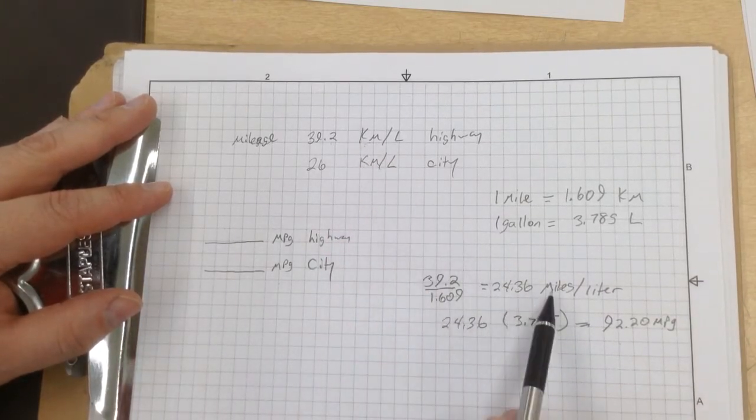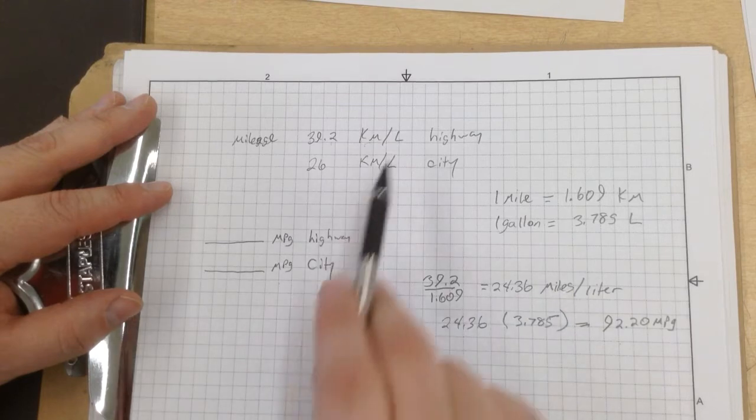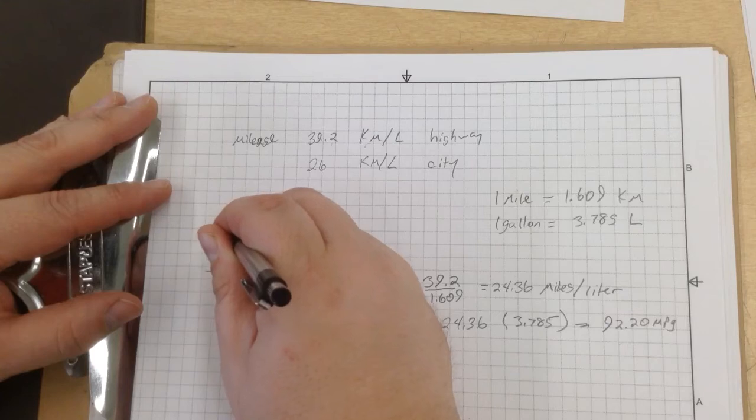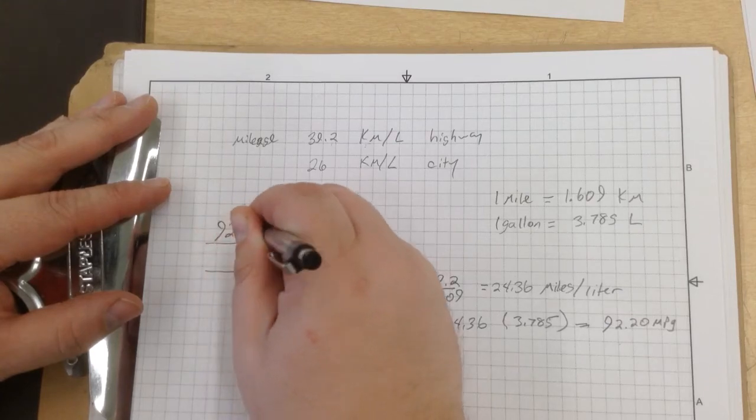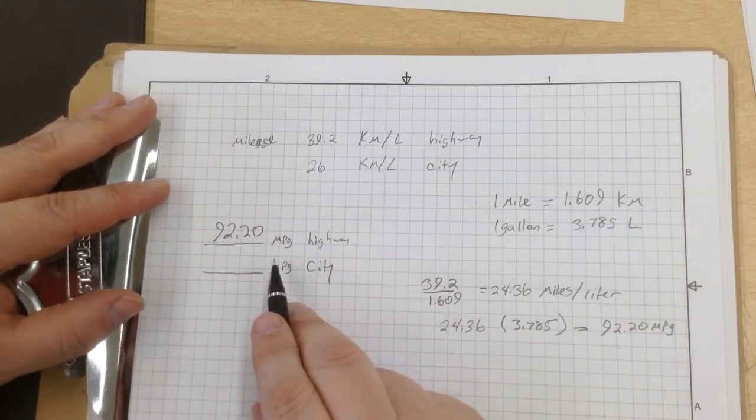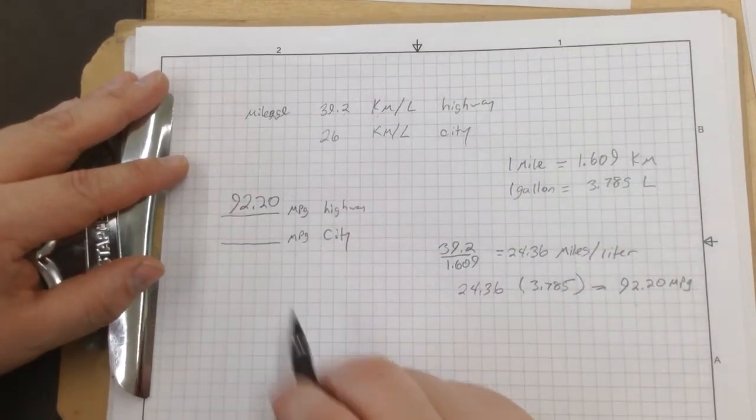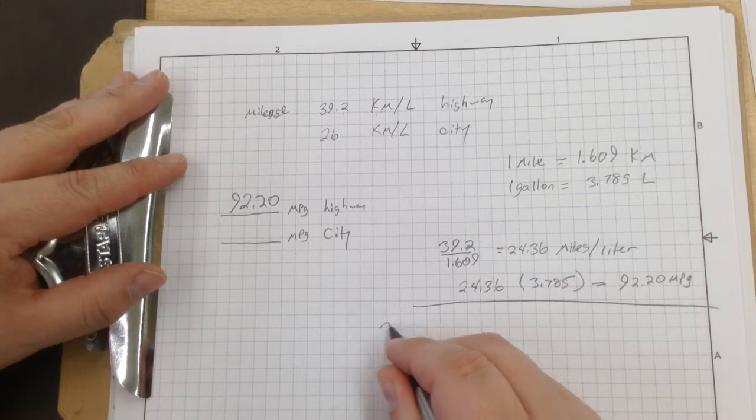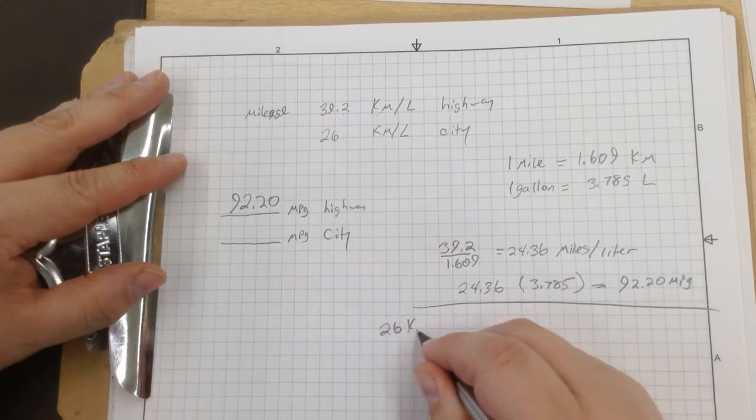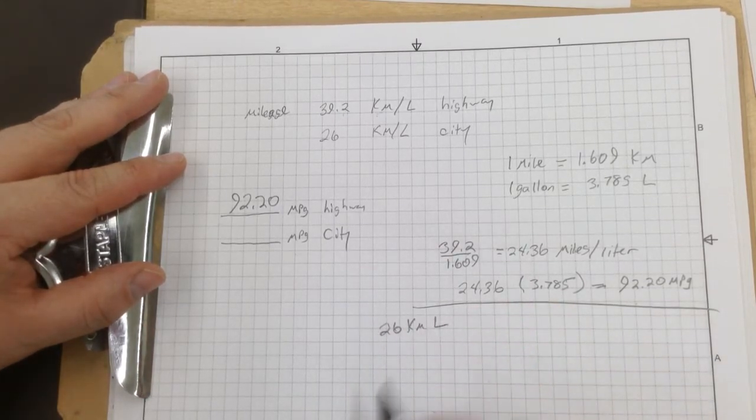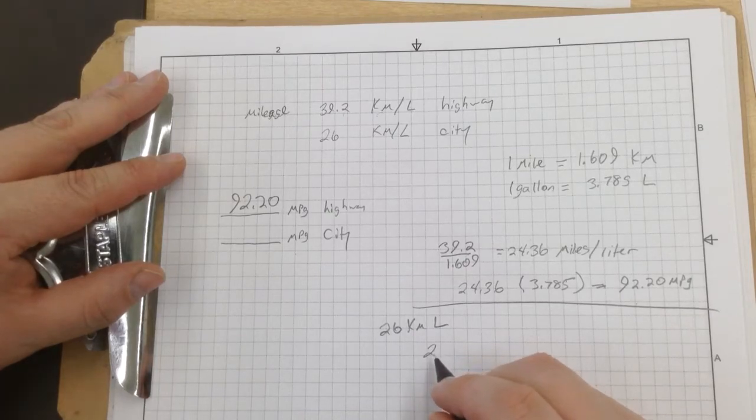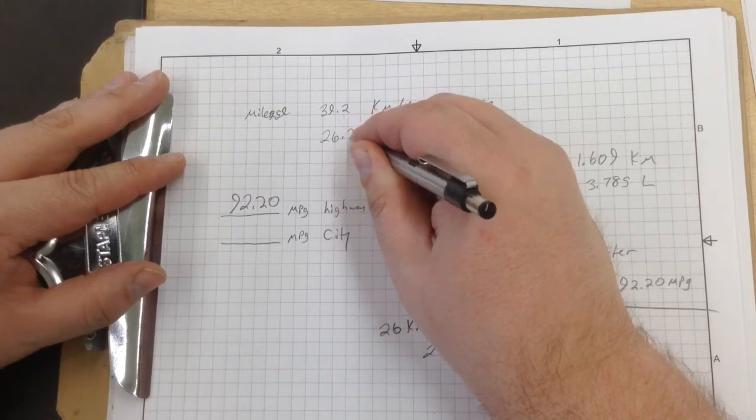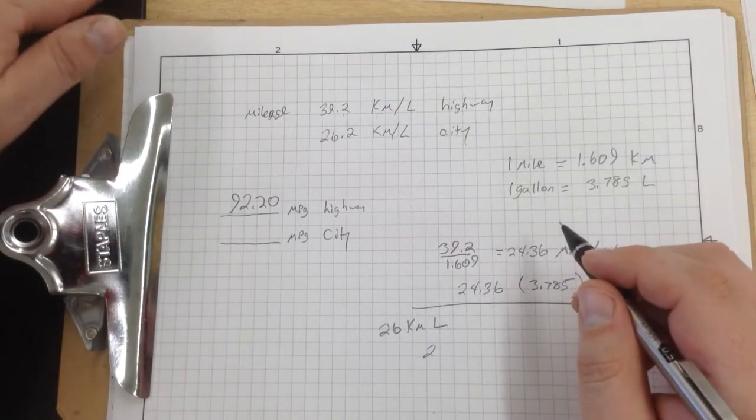We went through and converted kilometers to miles, then we converted liters to gallons. On highway, this particular car gets 92.2 miles per gallon. Now we do the same thing for the city. For city, we have 26.2 kilometers per liter.